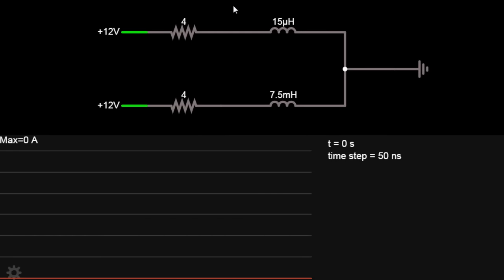Here, the 15 microhenry inductor represents the flyback transformer primary, and the 7.5 millihenry inductor represents the ignition coil primary. Both are supplied with 12 volts and limited to 3 amps through a 4 ohm resistor. Now watch the graph below as I start the simulation.